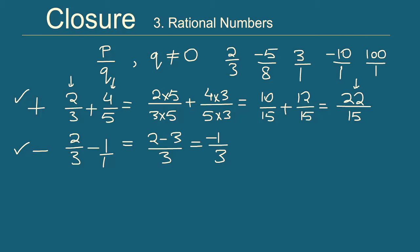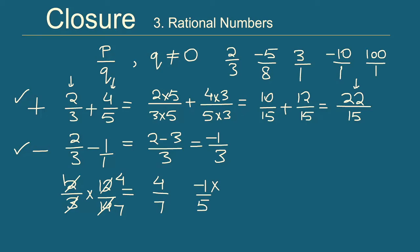What happens when we multiply two rational numbers? Take 2/3 times 12/14. Simplifying, this gives 4/7, a rational number. Another example: minus 1/5 times 3/8 gives minus 3/40, also a rational number. Whenever we multiply two rational numbers we always get a rational number, so rational numbers are closed under multiplication.